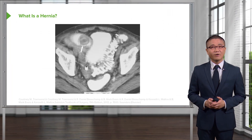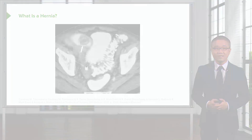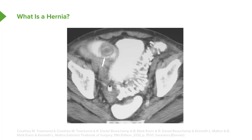Here we see a cross-sectional image of a CAT scan. You'll see that there is content where the white arrow is. This is the inguinal canal, likely fat or intestines — a containing hernia on the right side of the patient.